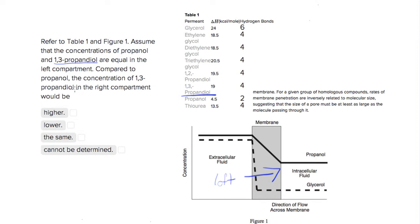Okay, so let's look at the differences. We see that our 1,3-propandyl and our propanol have different activation energies, but that's not what we worry about. Remember, the passage told us that the rates of membrane penetration are inversely related to molecular size.